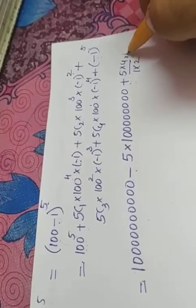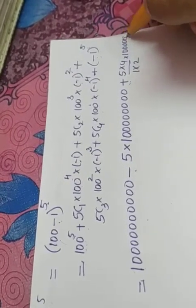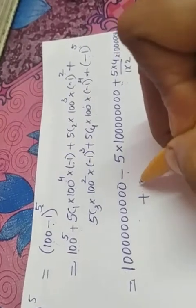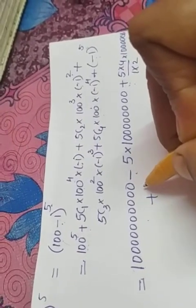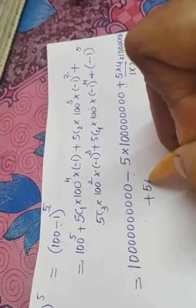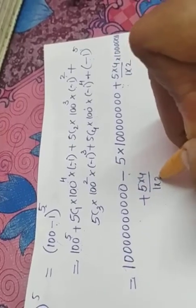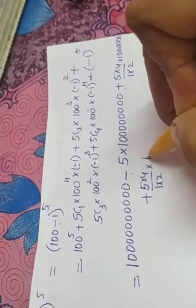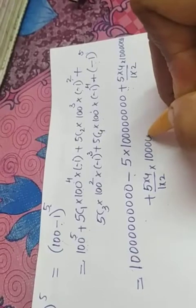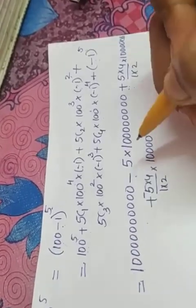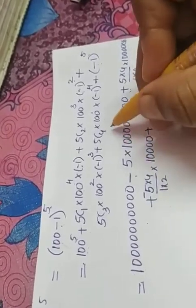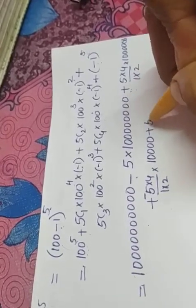100 cube means 1 and 6 zeros. Plus 5c3 is the same as 5c2 by the property. So we can write 5 into 4 by 1 into 2 into 100 square is 1 and 4 zeros. Actually, negative is there. So it will be negative.